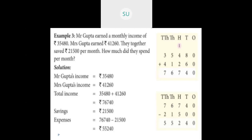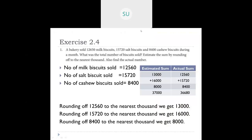Their total savings is 21,500 rupees. To find how much they spend per month, subtract savings from total income: 76,740 minus 21,500. Subtracting vertically: ones 0−0=0, tens 4−0=4, hundreds 7−5=2, thousands 6−1=5, ten thousands 7−2=5. So they are spending 55,240 rupees per month.